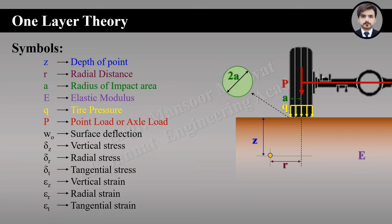These are the symbols we will use. 'z' is the depth of the point where we find stress, strain, and deflection from the surface. 'r' is the radial distance — the horizontal distance between the point and the central axis of the load. 'a' is the radius of the contact area, where the contact area between the tire and surface is considered circular. 'E' is the elastic modulus. 'q' is the uniform tire pressure exerted by the tire on the surface. 'p' is the point load or axial load.